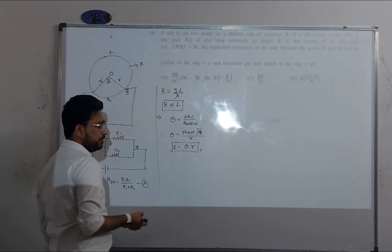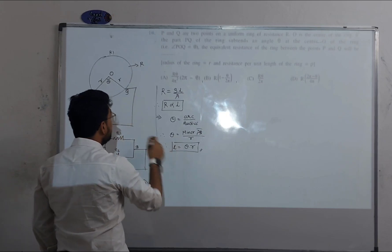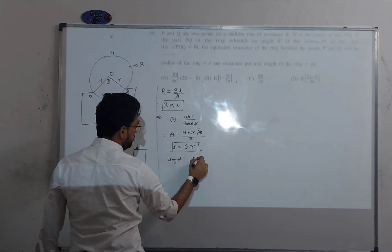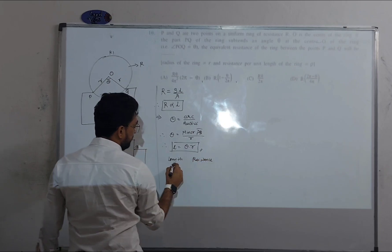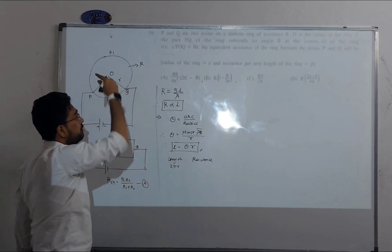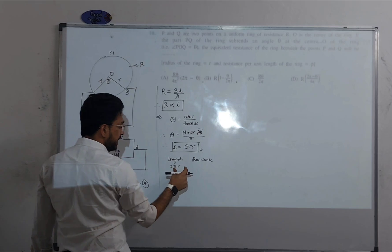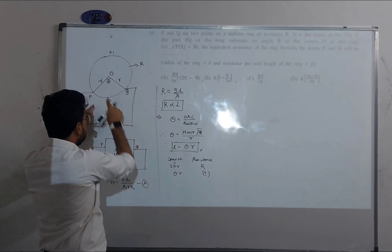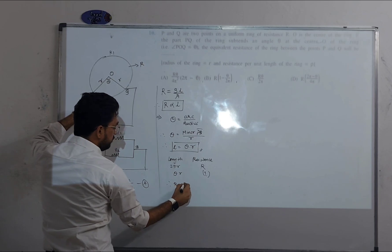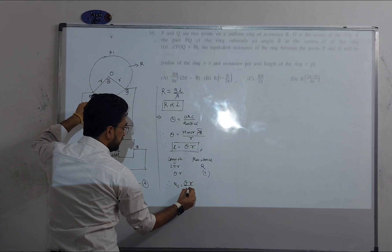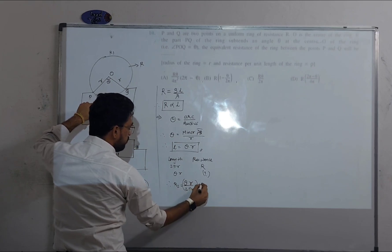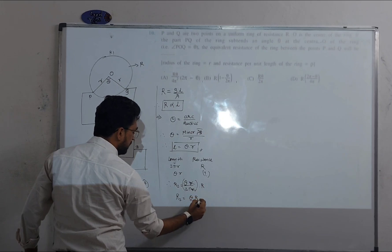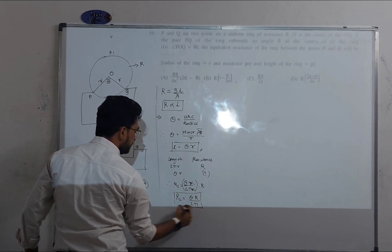Now to find resistance R2 corresponding to the minor arc: the total resistance of the ring is R for a total circumference of 2πr. Using proportionality, for a length of θr, R2 = (θr / 2πr) × R = θR / 2π. The small r cancels, giving R2 = θR / 2π.